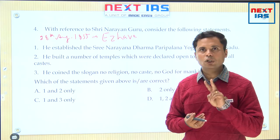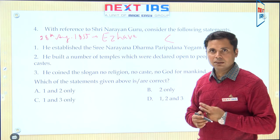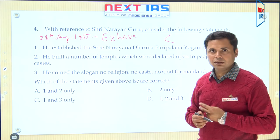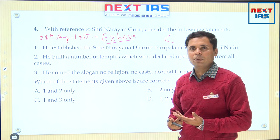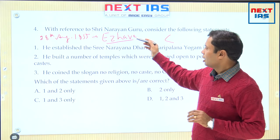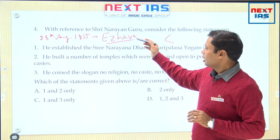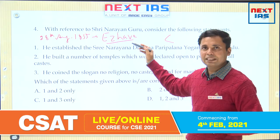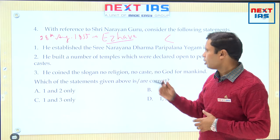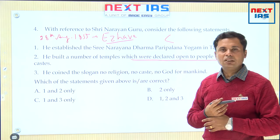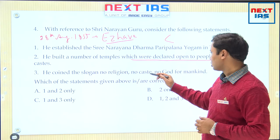Narayan Guru, a spiritual leader and social reformer, traveled not only in Kerala and Tamil Nadu but also to Sri Lanka. Throughout his life he preached against the caste-ridden society. To uplift the condition of the lower caste, he followed a two-pronged approach: he appealed to the Ezhava community not to practice untouchability towards those below them in the social hierarchy, and he built a number of temples declared open to each and every person of all castes. He gave the slogan 'one religion, one caste, and one God for mankind.'